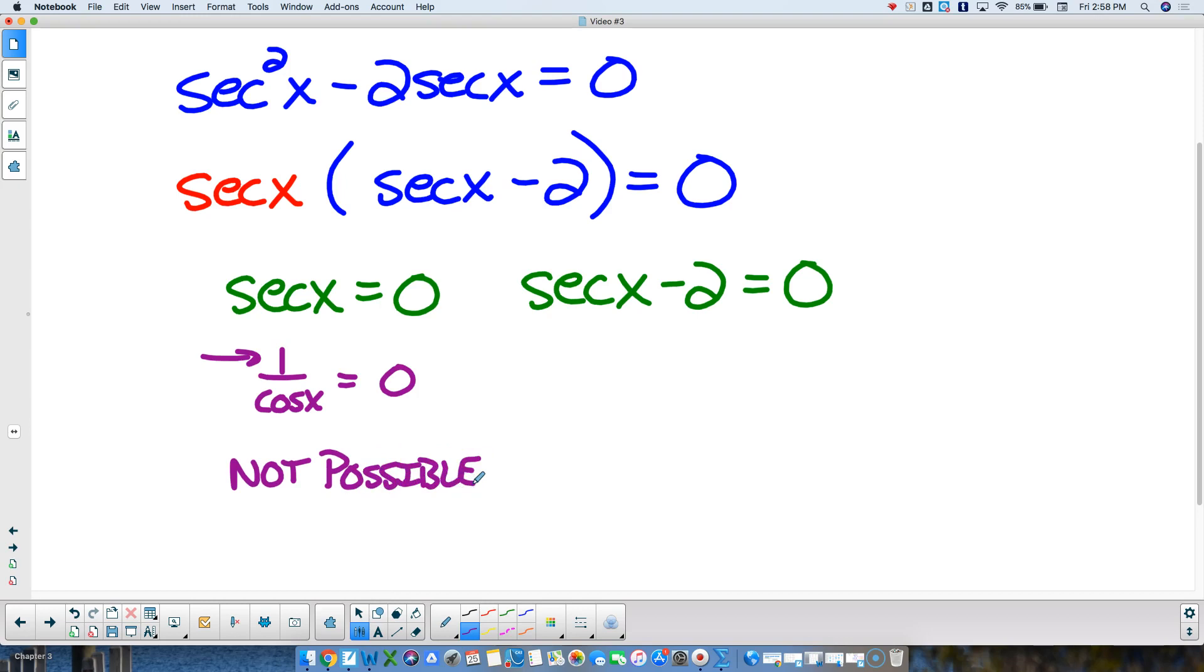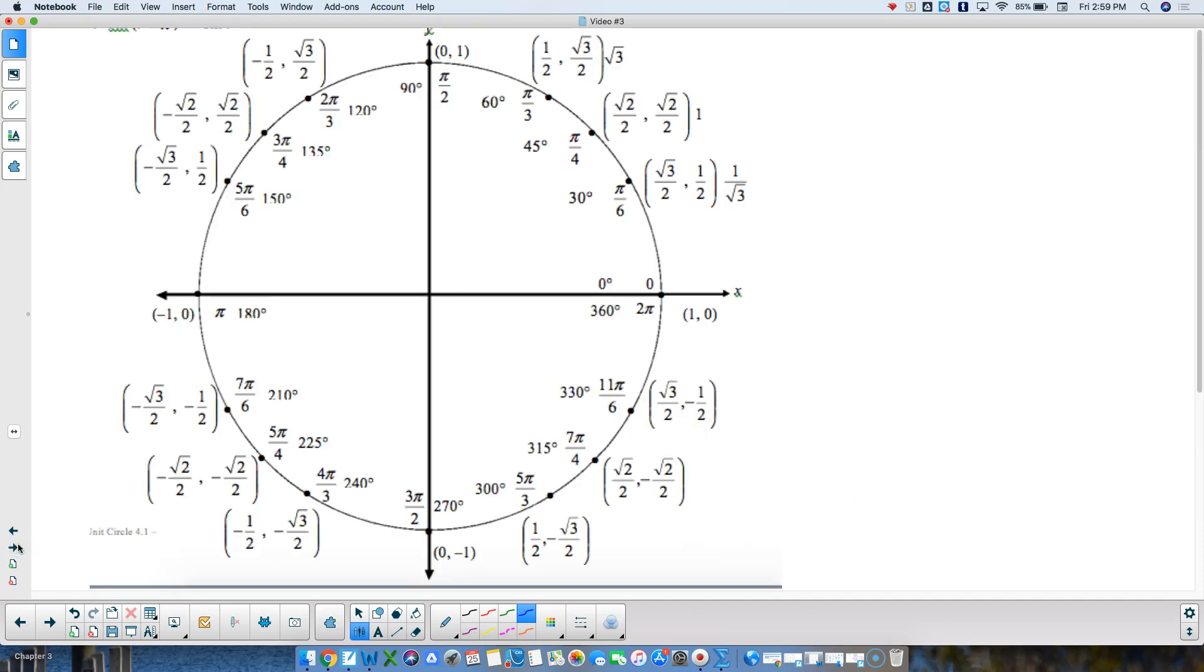Well, secant of x minus 2 equals 0. Well, that's secant of x equals 2. Secant, again, is 1 over cosine of x equals 2 over 1. So if I reciprocate both sides, that gives me the cosine of x equaling 1 half. So again, go to your unit circle, figure out where the cosine of x is positive 1 half. That happens here at pi over 3, and it happens here at 5 pi over 3.